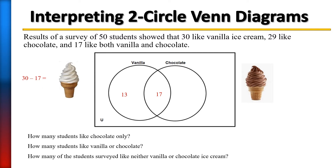Next, find the students who like chocolate. Chocolate is the entire circle which encloses the 17. So we take the number given for chocolate — 29 like chocolate — and subtract 17 to get the ones who are just chocolate only. That gives us 29 minus 17, which equals 12. Adding 17 and 12 gives a total of 29 students who like chocolate.